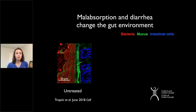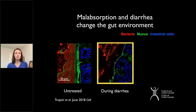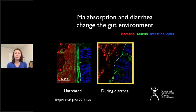Normally, in animal models, when we have untreated animals, we see that the mucous lining is thick and separates our cells — shown in blue — from our bacteria, which are in red. What we were really surprised to find is that during diarrhea, this protective mucous layer was almost completely depleted, leading to direct contact between bacteria and our cells.